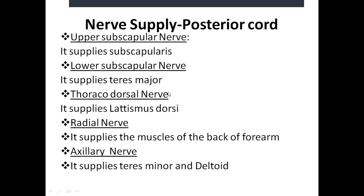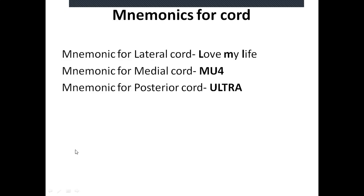The mnemonic for the posterior cord — these are the five branches — is ULTRA (U-L-T-R-A). You can remember the cords in an easier way using these mnemonics.